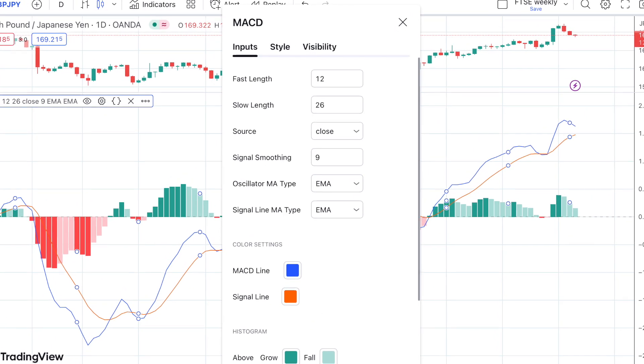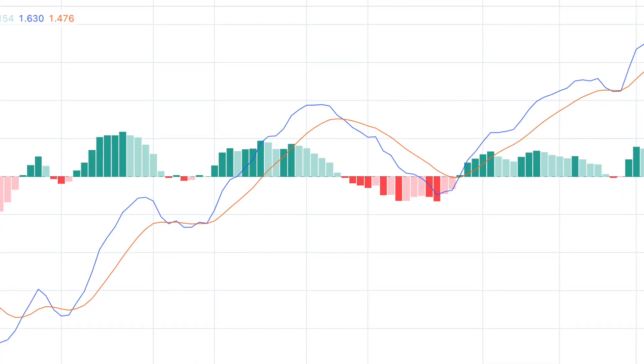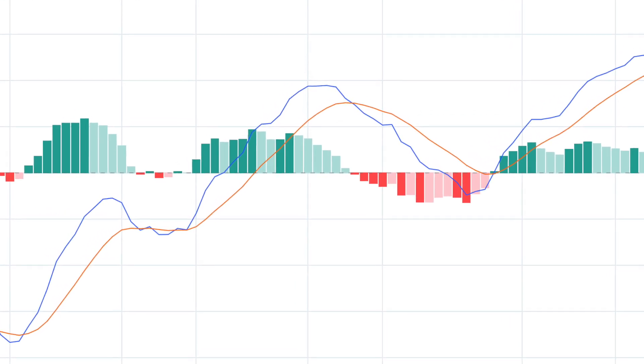The strategy is pretty simple and in all the tests we're going to be using the standard settings for the MACD indicator: 12, 26 and 9. Looking at the MACD indicator we've got three parts to it. We've got the MACD line, the signal line or the average of the MACD line, and then we've got the histogram. Our strategy takes signals when the two lines cross each other or when the histogram crosses either above or below the zero line.